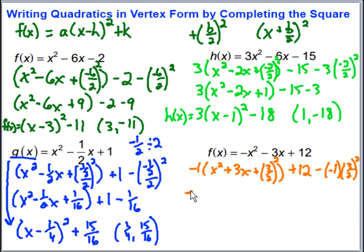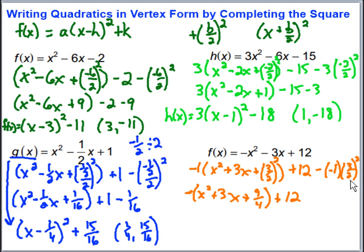So we have negative times the quantity x squared plus 3x, then 3 over 2 squared is 9 over 4, so plus 9 over 4 inside. Outside we have plus 12, and then 9 over 4 times negative 1 is negative 9 over 4, and we're subtracting it — so subtracting a negative becomes plus 9 over 4. To combine 12 plus 9 over 4, convert 12 to 48 over 4, giving 48 plus 9 which is 57 over 4.